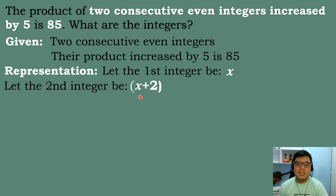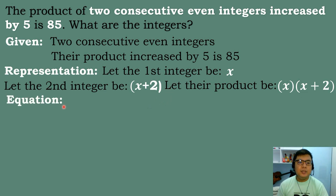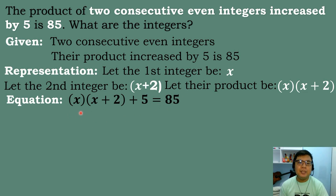Let their product be equal to x times (x plus 2). Then we form our equation: the quantity x times (x plus 2) plus 5 equals 85, since the product is increased by 5. So this is our equation for this problem.